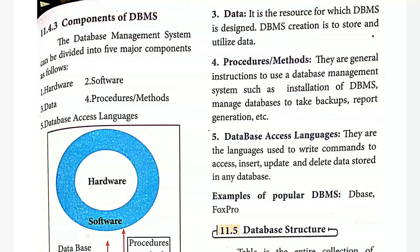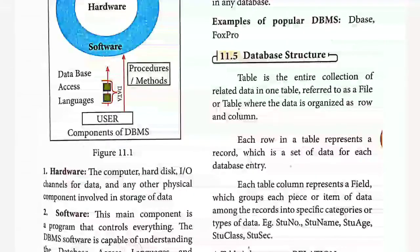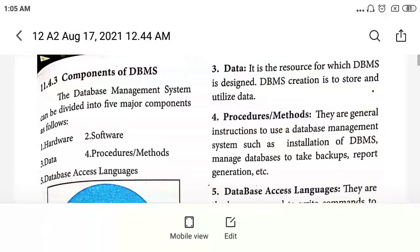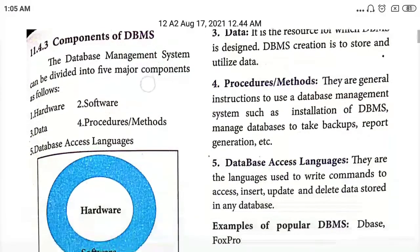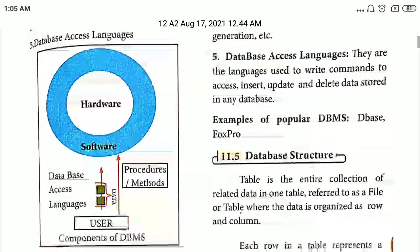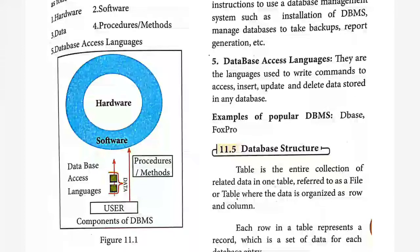Hello students, today we are going to see the topic 'Database Structure.' Before going into that topic, we'll do a quick recap about components of DBMS. The components of DBMS consist of five major components: hardware, software, data, procedures/methods, and database access language. You can see this in the database components diagram.